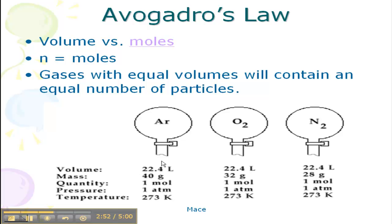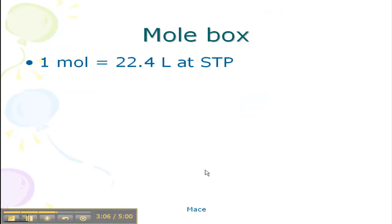But what this tells us is that the volume of 1 mole at STP, because 1 atm and 273 Kelvin is standard temperature and pressure, 1 mole has a volume of 22.4 liters. And that's what Avogadro's law tells us.